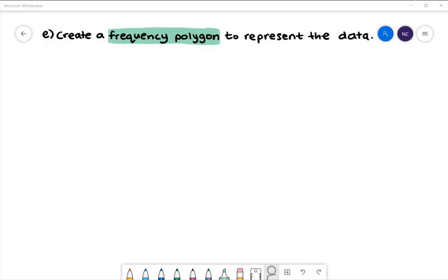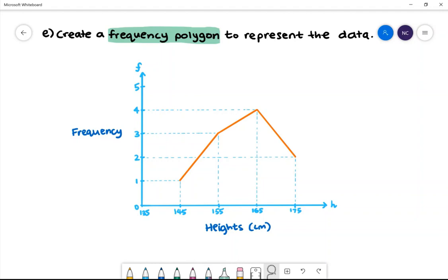Part E: Create a frequency polygon to represent the data. Here is our frequency polygon. We have the midpoints of each height class on the x-axis and the frequency on the y-axis.